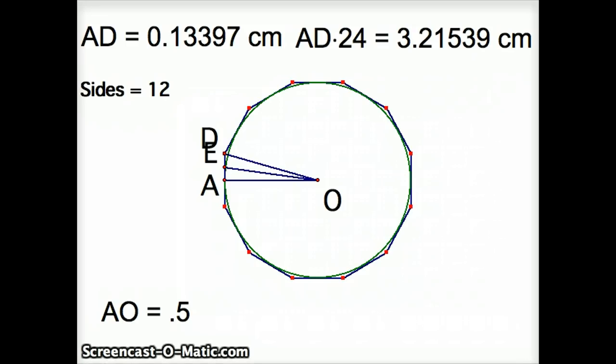Where we last left off, we had figured out that the length of AD was 0.13397, and that gave us an approximation of pi. It was the perimeter of this 12-sided figure, which is 3.21539.